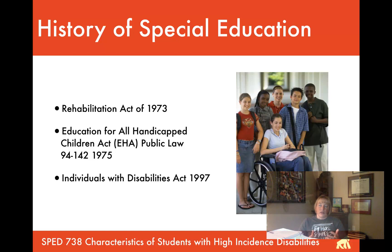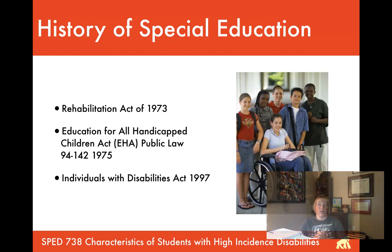In 1973, as part of the Civil Rights Movement, the Rehabilitation Act was passed. This gave people with disabilities rights and required schools to provide accommodations. That was really the first time schools were impacted by the Civil Rights Movement in terms of individuals with disabilities. Then in 1975, the federal government took that a step further, passing PL 94-142, the Education for All Handicapped Children Act, or EHA.